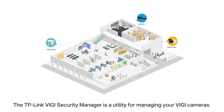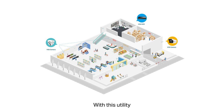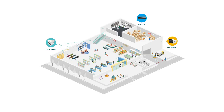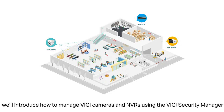The TP-Link Vigi Security Manager is a utility for managing your Vigi cameras and NVR centrally. With this utility, you can control your security system from the convenience of your desktop or laptop and have quick access to your video feeds. Today, we'll introduce how to manage Vigi cameras and NVRs using the Vigi Security Manager.